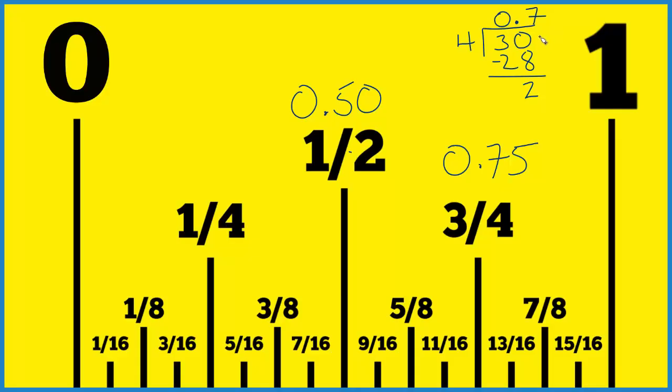4 doesn't go into 2, but we could put another 0 here if we move over a decimal point. So we'll bring that down and 5 times 4, that's 20.